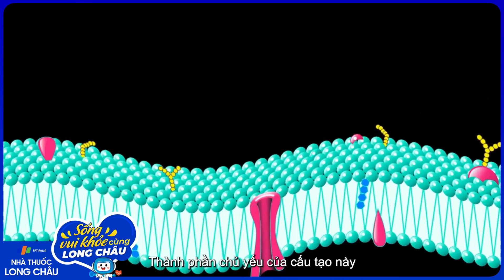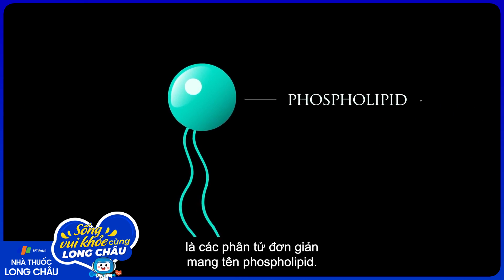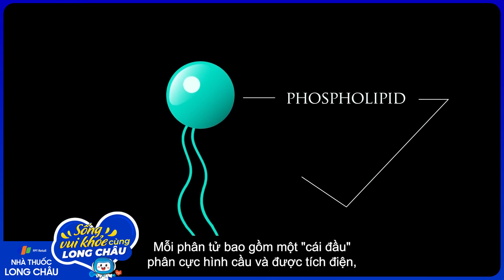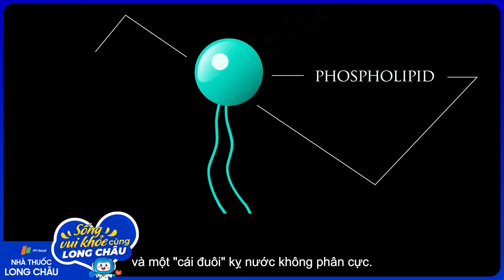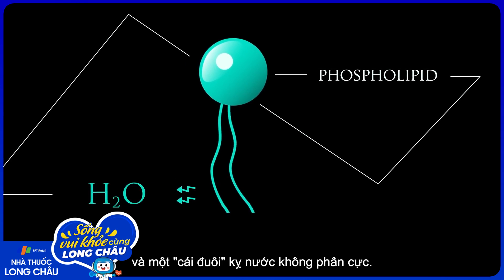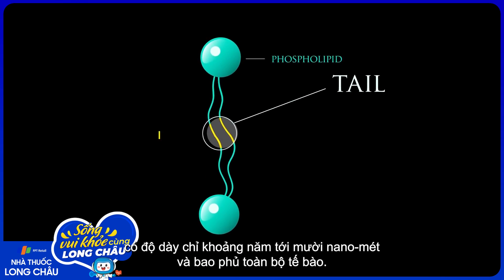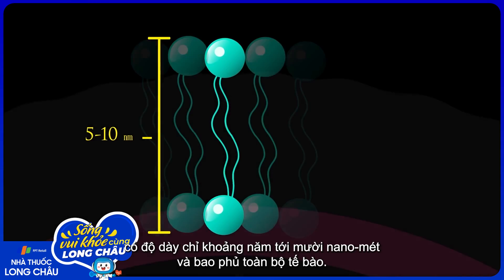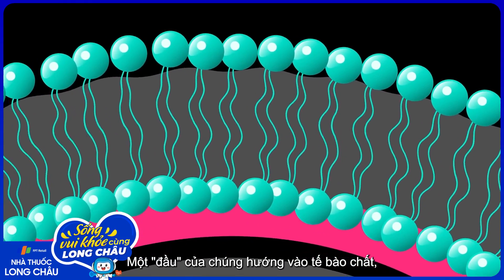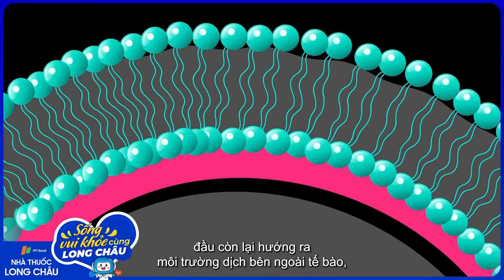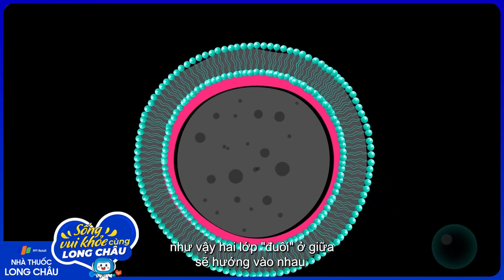The primary component of the fluid mosaic is a simple molecule called a phospholipid. A phospholipid has a polar, electrically charged head which attracts water, and a nonpolar tail which repels it. They pair up tail to tail in a two-layer sheet just 5 to 10 nanometers thick that extends all around the cell. The heads point in towards the cytoplasm and out towards the watery fluid external to the cell, with the lipid tails sandwiched in between.